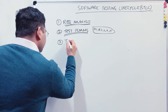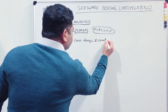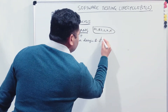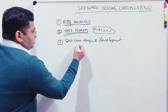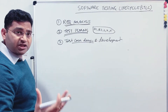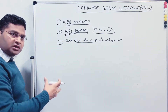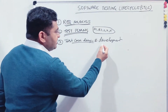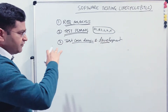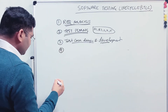The third phase is Test Case Design and Development. You apply test design techniques such as equivalence partitioning and boundary value analysis to design your test cases, determining what test cases are needed for each functionality. Then you develop and write those test cases into a test management tool, categorizing them feature-wise or requirement-wise.